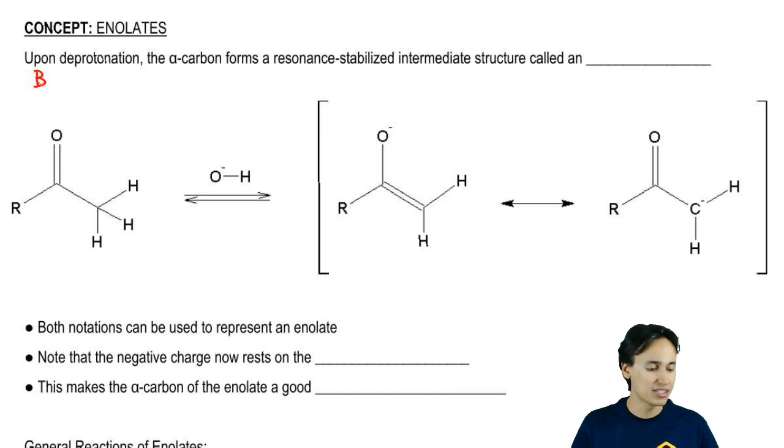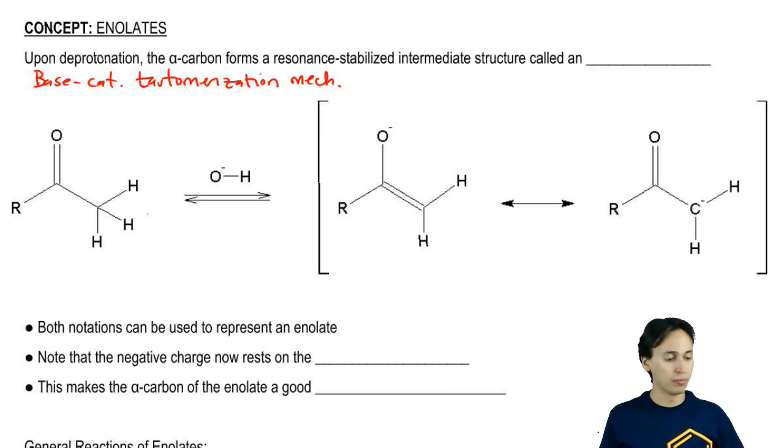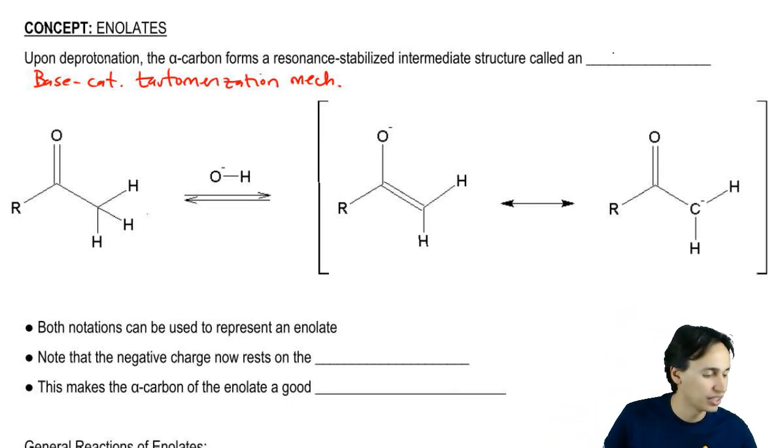Specifically in the base-catalyzed tautomerization mechanism, the base-catalyzed version, we form a resonance-stabilized intermediate called an enolate.